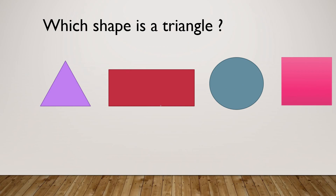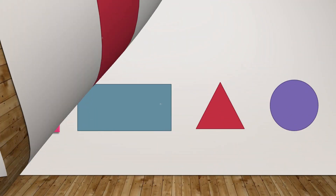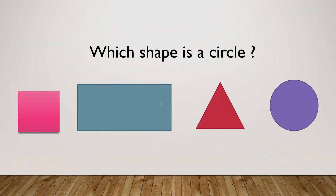Yes, very good. This shape is a rectangle. Next one is, which shape is a circle? Yes, very good. This shape is a circle.